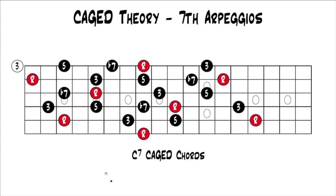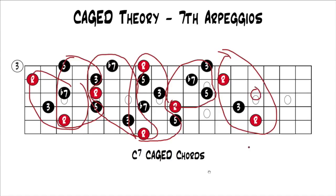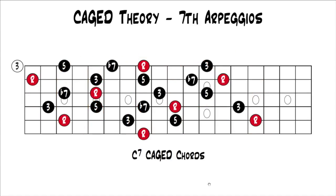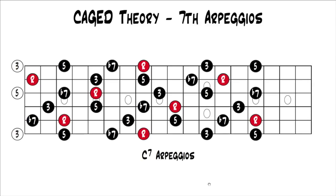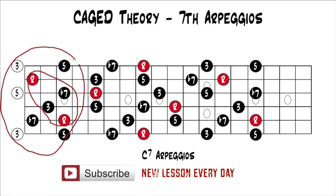Same thing with dominant seven: C seven CAGED chords up and down the fretboard — C seven shape, A seven shape, G seven shape, E seven shape, and D seven shape. Then you'd have your C seven shape again at the top. If we add in the extra notes to make it C seven arpeggios, your CAGED shapes are still living within there, making it really easy to visualize where the arpeggio lies. There's your C seven shape; here's your arpeggio with the extra notes. You can do that up the whole fretboard.